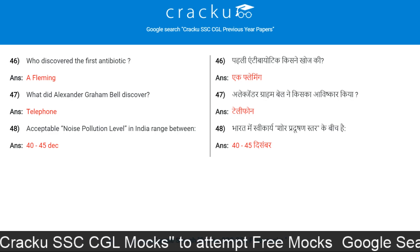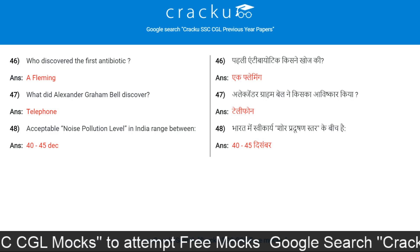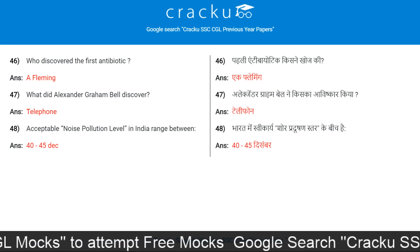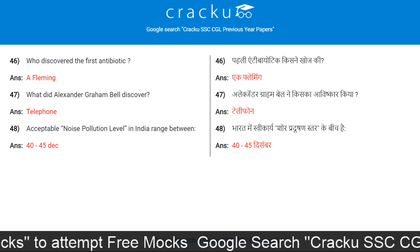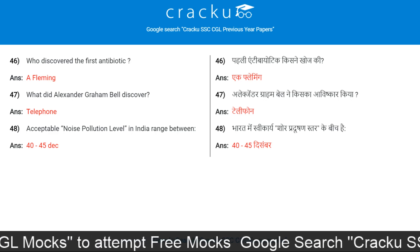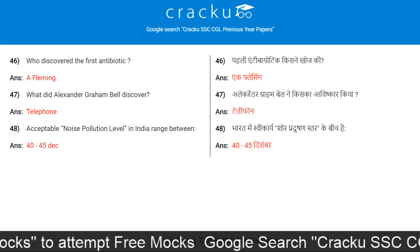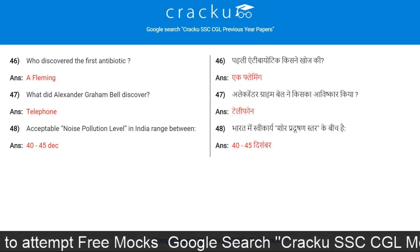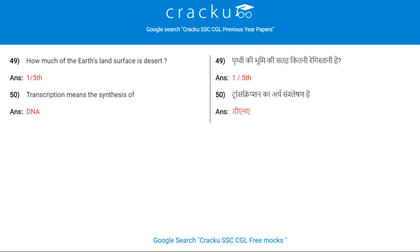Acceptable noise pollution levels in India range between 40 to 45 decibels. How much of the earth's land surface is desert? One fifth. Transcription means the synthesis of RNA.